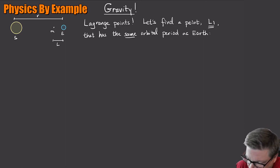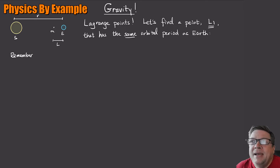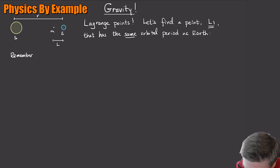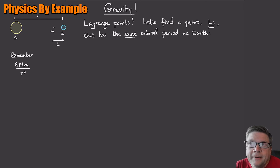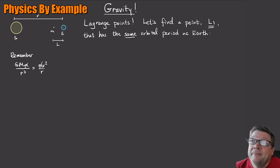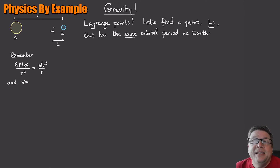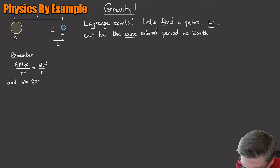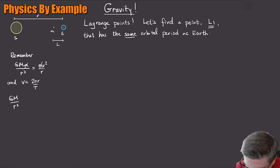Let's do a little scratch work. For any mass going around the Sun or any other object, the force of gravity is G times M times m over the distance squared, and that equals m times v squared over r. The mass goes away, and the speed around the object is the distance traveled divided by time — the circumference 2πr over T.